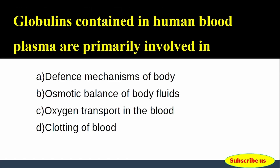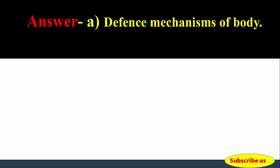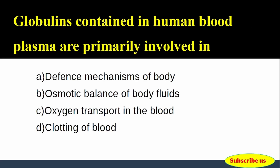Next question: Globulins contained in human blood plasma are primarily involved in — Options: A) Defense mechanisms of body, B) Osmotic balance of body fluids, C) Oxygen transport in the blood, D) Clotting of blood. Answer: Option A, Defense mechanisms of body. Globulins in human blood plasma are primarily involved in defense mechanisms of the body.